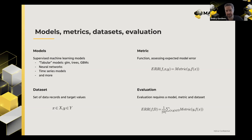Looking at a single value doesn't make much sense — it can be very unstable. Whenever we talk about evaluating a model, it puts together three terms: model, metric, and dataset. Model evaluation is never abstract — it is always connected to a dataset. A model that performs very well on one dataset might perform really poorly on another. Almost all metrics are just averages of metric values over all the records in the dataset.